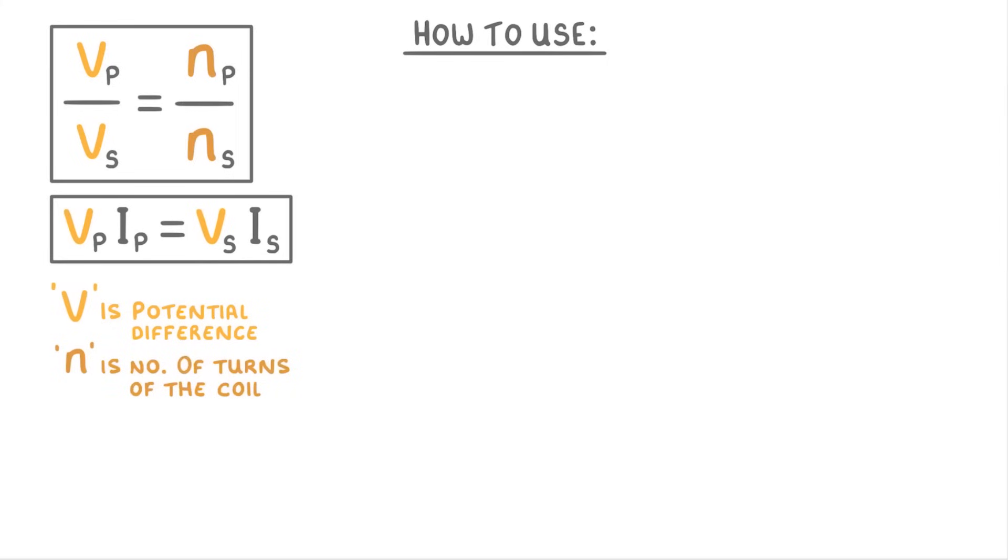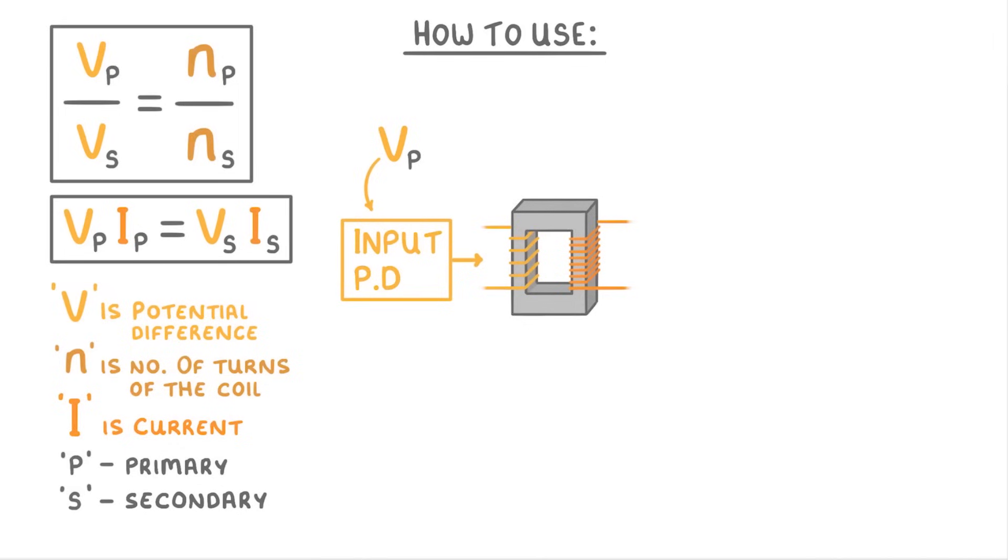The little p's and s's stand for primary and secondary coil. So Vp would mean the input potential difference across the primary coil, while ns would mean the number of turns on the secondary coil.